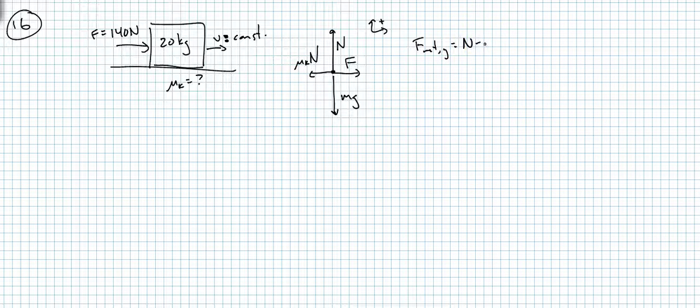F net Y is N minus MG, which is zero. F net X is F minus mu sub K N, which is zero. We're solving for mu sub K. So F is mu sub K N, which is N is MG, mu sub K MG. So mu sub K is F divided by MG.